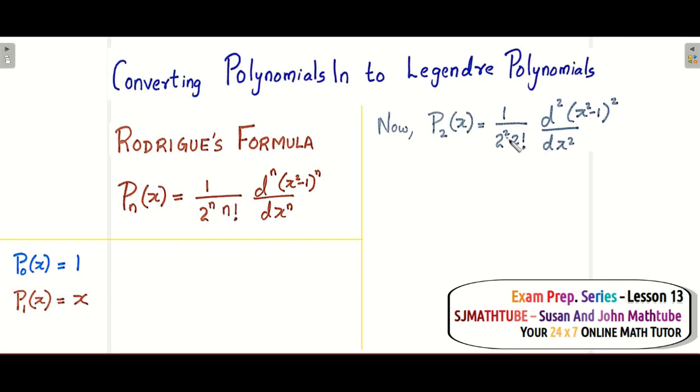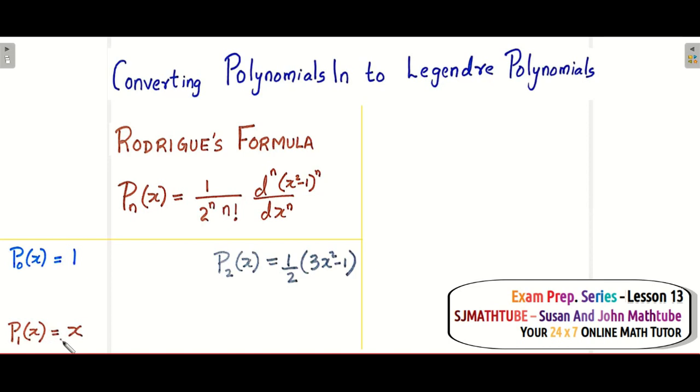Next, P2(x) will be 1 over 2² times 2 factorial times the second order derivative. I'll differentiate once - something squared gives 2 times the same thing times 2x. I'll take that 2 times 2, which is 4, common and cancel it. Take x inside the bracket to get x² times x minus x, then differentiate. The first term becomes 3x² and the second becomes 1. So P0 equals 1, P1 equals x, and P2 equals (3x² - 1)/2.